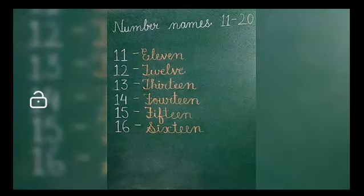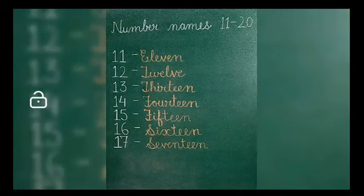And the next number name is seventeen, one seven, seventeen. So, S, E, V, E, N, SEVEN, T double E and TEEN. SEVENTEEN. SEVENTEEN.